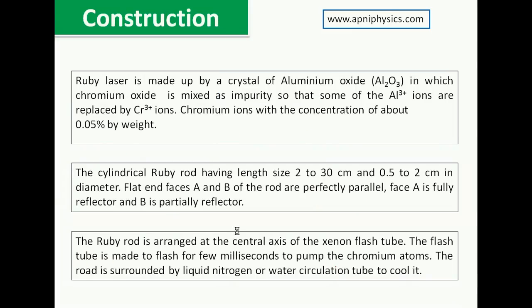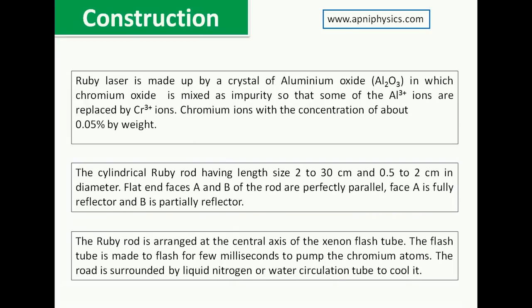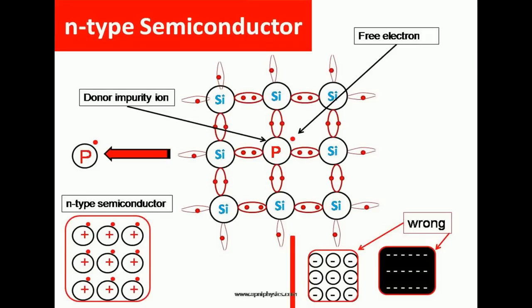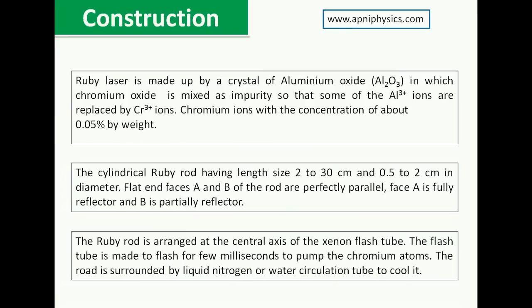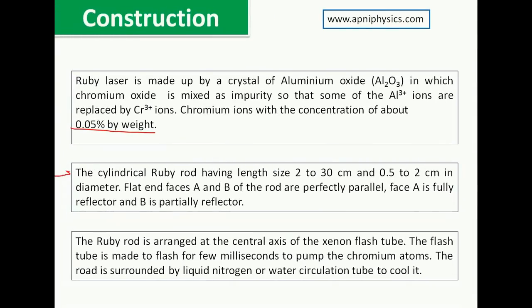The lasing medium is the ruby rod, made of aluminium oxide, which is pink in color. We mix a small impurity of chromium oxide into it — about 0.05% by weight. The chromium ions replace the aluminium atoms in the crystal lattice, similar to how impurity ions replace silicon or germanium in p-type and n-type semiconductors.